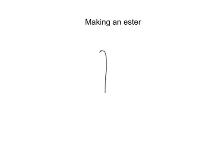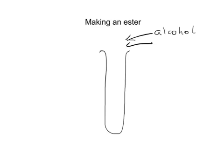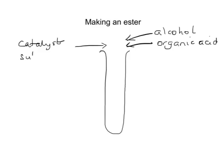Making an ester in the lab is quite straightforward. We start with a boiling tube and add three substances: a small amount of an alcohol, for example ethanol, and an organic acid — any acid which is made from living things, for example ethanoic acid, which is found in vinegar. Then we add just a few drops of a catalyst, which would be a strong acid like sulfuric acid.